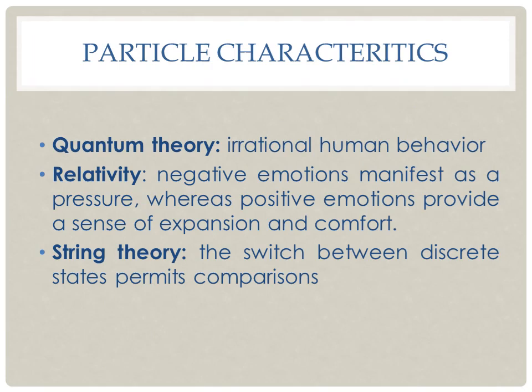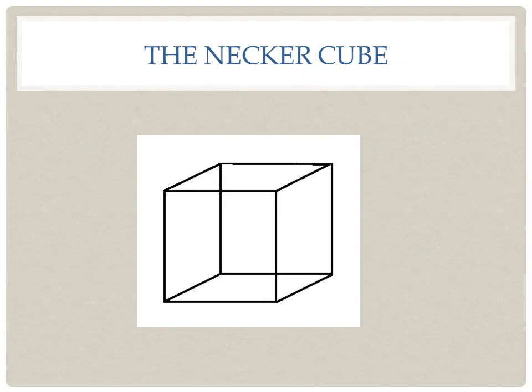The same physical principles that are true for particles are also true for the mind. Quantum theory, relativity, and string theory also describe consciousness. Quantum theory has been utilized in psychology and sociology for decades. Perhaps this can be represented by a Necker cube — this drawing takes on a three-dimensional representation in the mind, and there is a quantum-like fluctuation where either the left-hand side or the right-hand side of the cube moves forward in the mind.